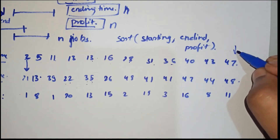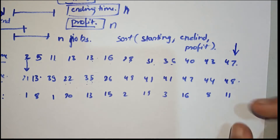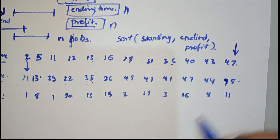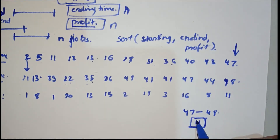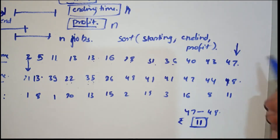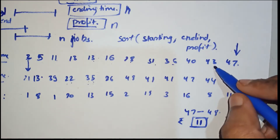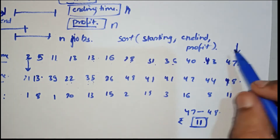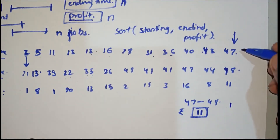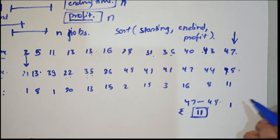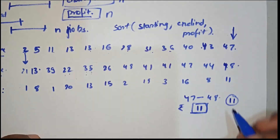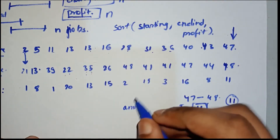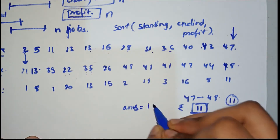Now what we can do is iterate through the last element. At the end, from 47 to 48 we can earn only 11 profit — let's call it 11 rupees. So we can earn only 11 rupees by working from 47 to 48. We will store the answer in variable 'ans' — answer is 11 so far.